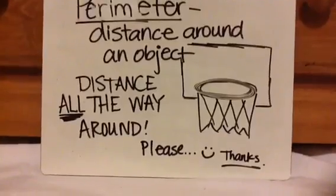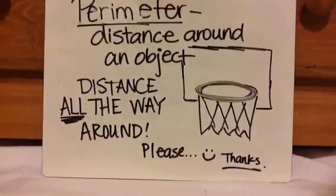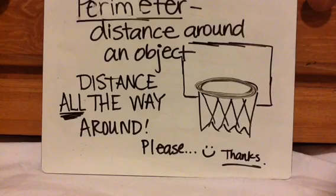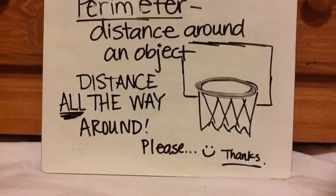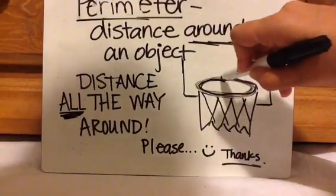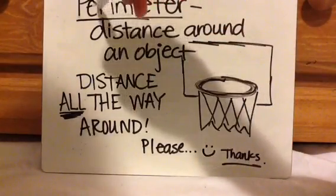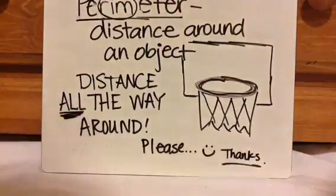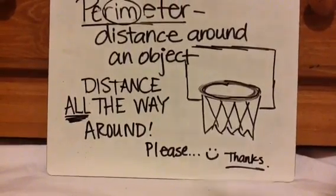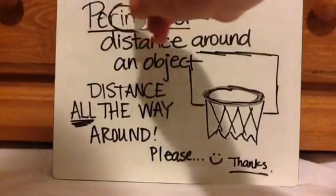Let's talk about the definition of perimeter. The definition of perimeter is it is the distance around an object. Distance all the way around. So I always remember it as a basketball rim. It goes all the way around. So whenever I see the word perimeter I always circle that word rim and as I'm making that circle I'm telling myself distance all the way around.